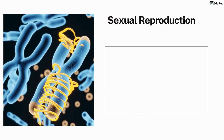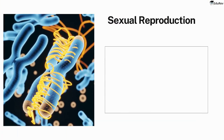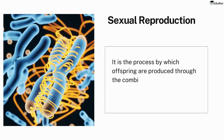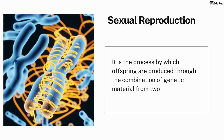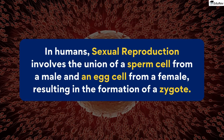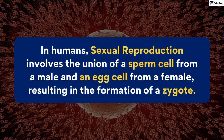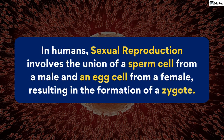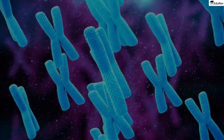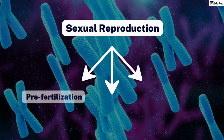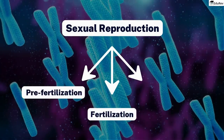Now coming to the second method — sexual reproduction. It is the process by which offspring are produced through the combination of genetic material from two individuals of opposite sexes. In humans, it involves the union of a sperm cell from a male and an egg cell from a female, resulting in the formation of a zygote, which eventually develops into a new individual. The process of sexual reproduction can be divided into three main stages: pre-fertilization, fertilization, and post-fertilization.